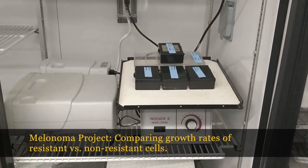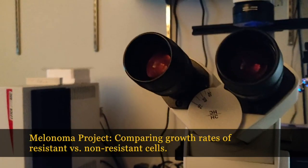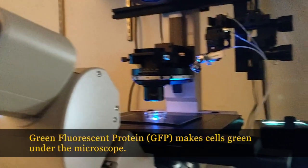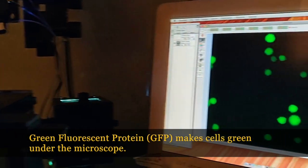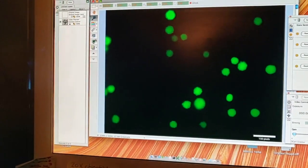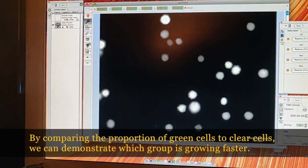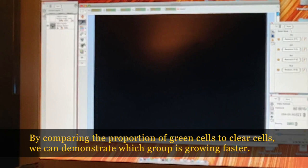One project revolves around melanoma cancer cells. We take resistant cells and introduce a green fluorescent protein in order to make them green under the microscope. We then mix them with clear, non-resistant cells. We mix these two cells together and compare the growth rates. We want to see if there is a growth advantage to being resistant.